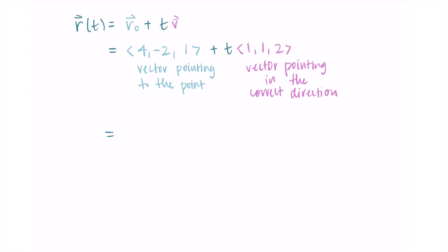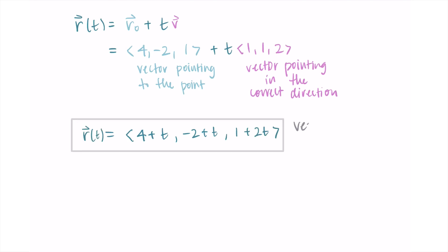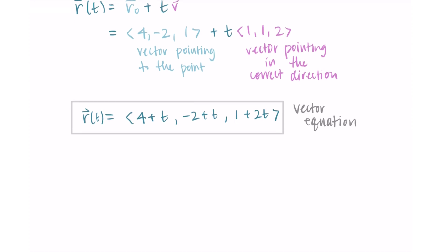This formula gives the vector equation of the line. Writing it as one vector: the first component is 4 plus t (distributing t times 1), the second is -2 plus t, and the third is 1 plus 2t. This is the vector equation of the line with t as the parameter.